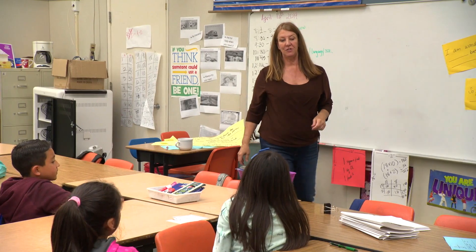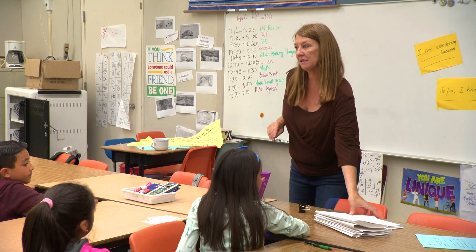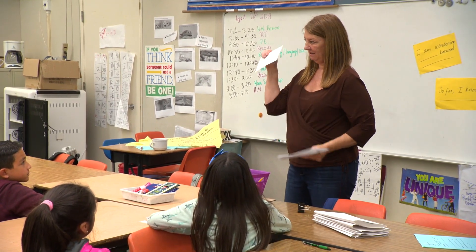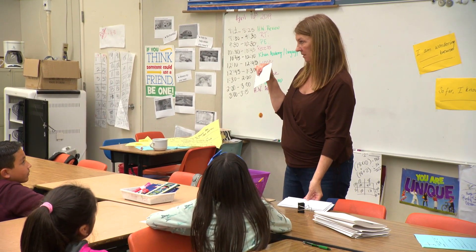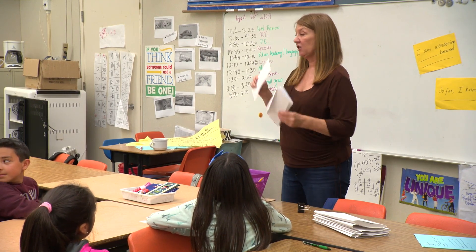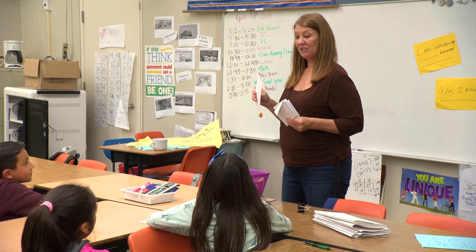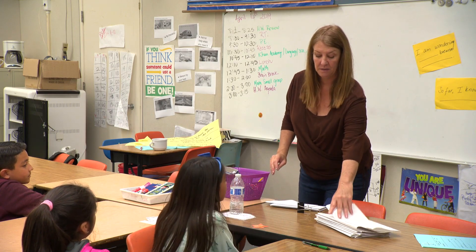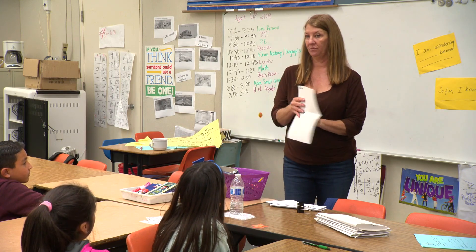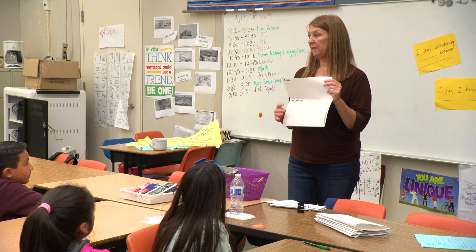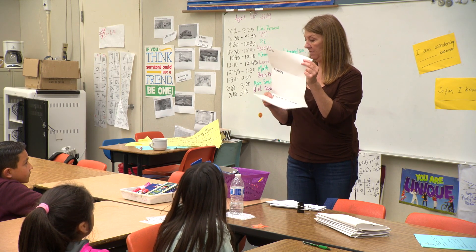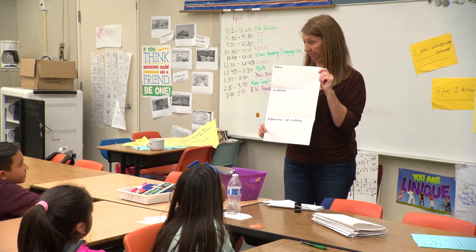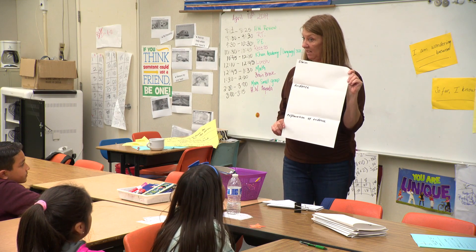I'm going to hand out to you some envelopes that have a paragraph written and cut into strips. What you're going to do is arrange these strips in an order that makes sense to you and your partner, and you're going to put them on this graphic organizer. You're going to want to have your claim, your evidence, and your explanation of your evidence. Are there any questions?